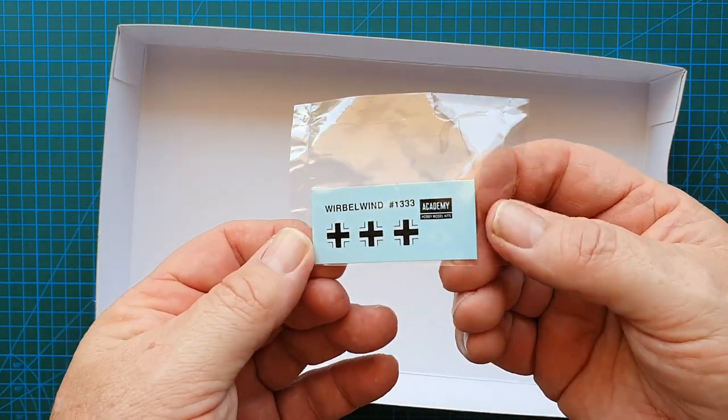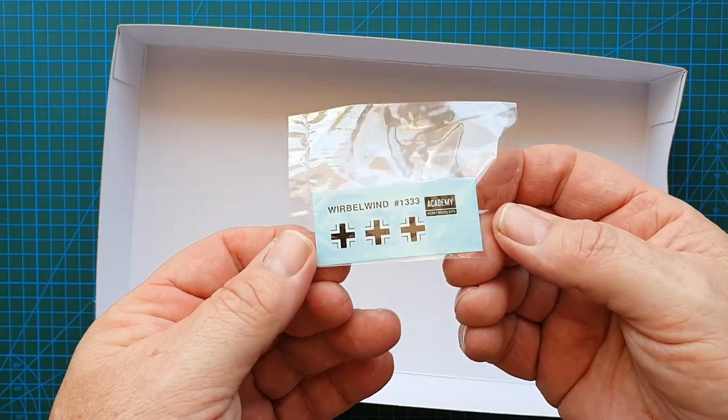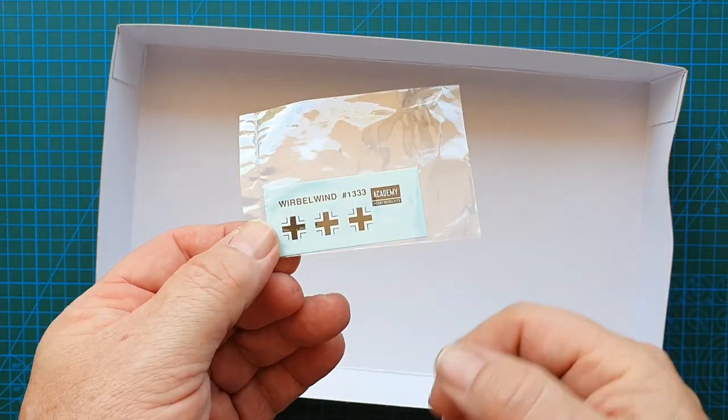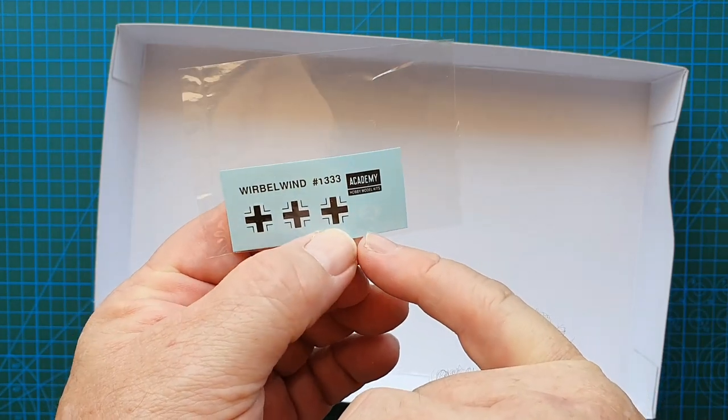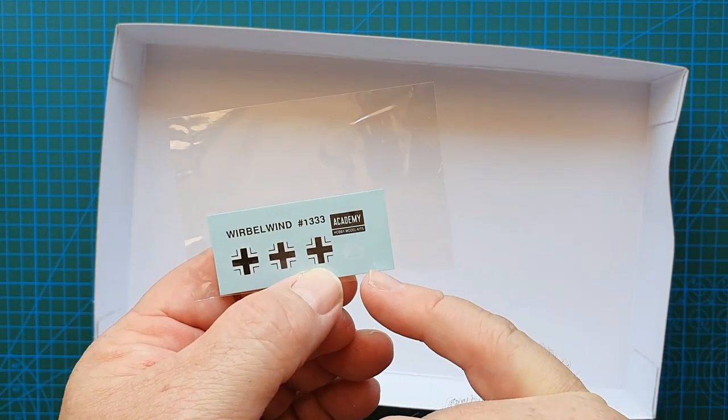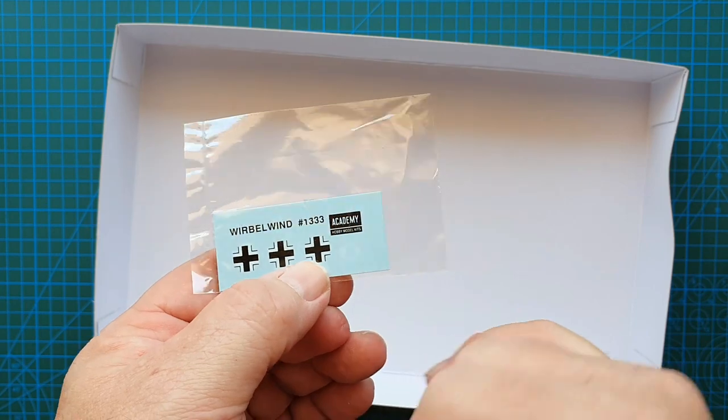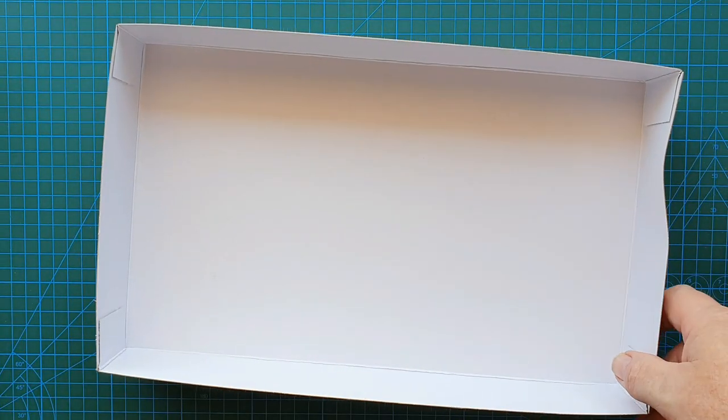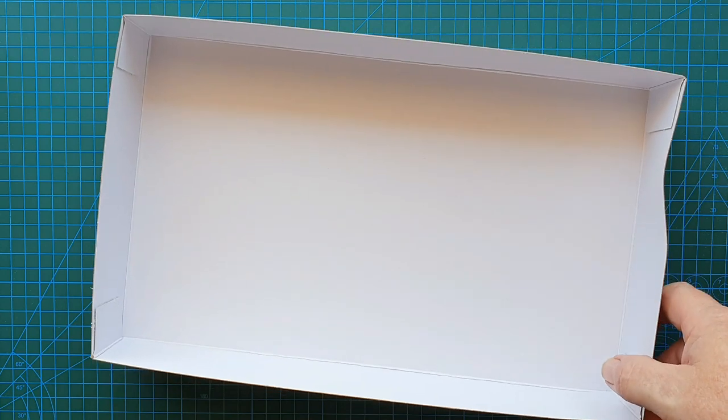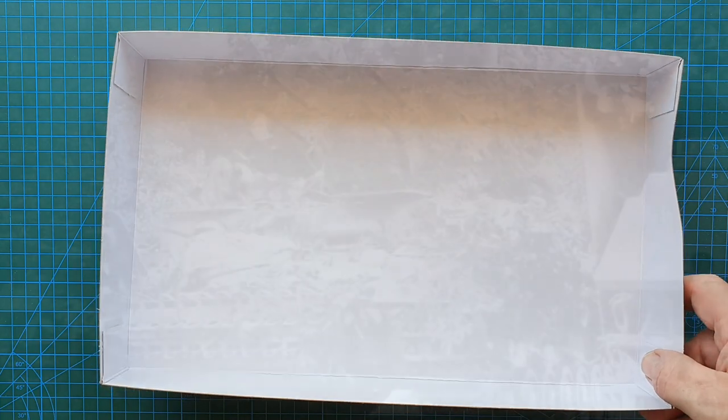Your very little tiny decal sheet, basically just the German crosses and I think that might be - I'll have a closer look when we get to looking at the decals - that may be divisional, but I'm not sure. So that's what's in the box. In a second we'll have a look at the instructions and the very small decal sheet.